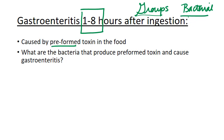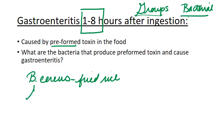There are really only two organisms that make a preformed toxin that's going to cause gastroenteritis. The first one is Bacillus cereus — we talked about this one earlier in the curriculum; it's sometimes associated with warm rice or buffets. The other one is Staphylococcus aureus, which we expect to see on salty foods — canned ham is a good example, or deli meat of any variety.